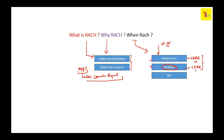To summarize when RACH takes place: it occurs at the time of initial acquisition or initial access, at the time of handover, and at the time of radio link failure. We already have a video related to radio link failure. At the time of radio link failure, the case of RRC connection re-establishment comes into the picture, and RACH is performed to recover from that. These are the important aspects of when RACH happens.